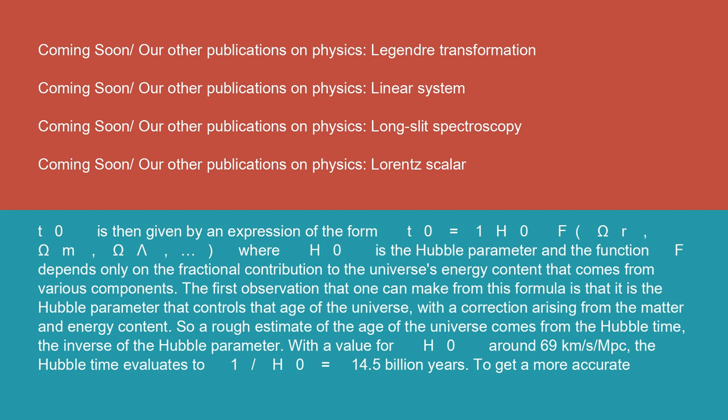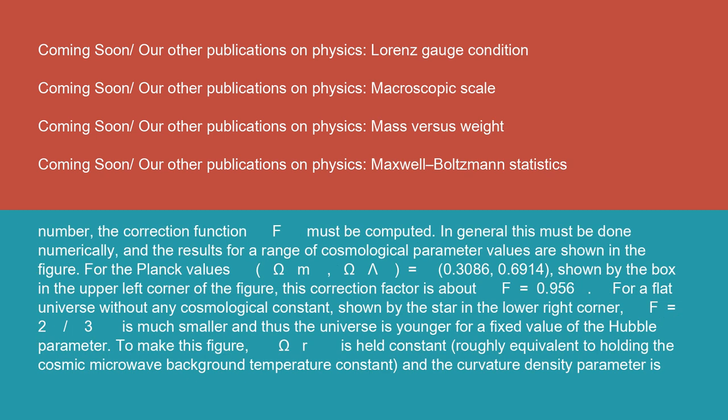Where H0 is the Hubble parameter, and the function f depends only on the fractional contribution to the universe's energy content that comes from various components. The first observation that one can make from this formula is that it is the Hubble parameter that controls the age of the universe, with a correction arising from the matter and energy content. So a rough estimate of the age of the universe comes from the Hubble time, the inverse of the Hubble parameter. With a value for H0 around 69 kilometers per second per Mpc, the Hubble time evaluates to 1/H0 equals 14.5 billion years.